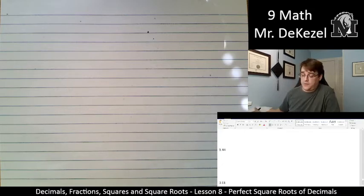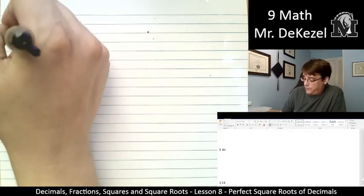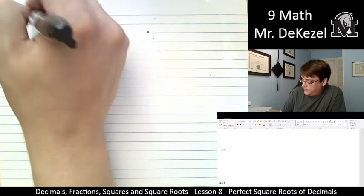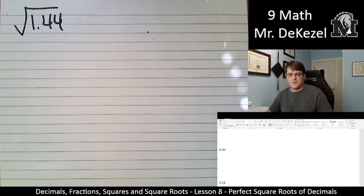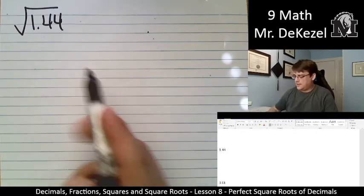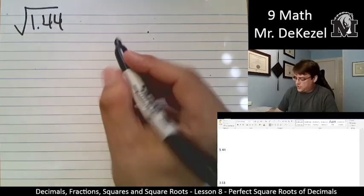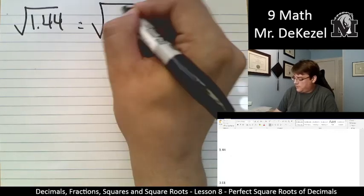So this one we have a decimal as well, even though it's 1.44. So let's do the root of 1.44. Again, doing the root of decimals is not usually easy. So let's go ahead and change this into a fraction. So this is the same as the root of 144 over 100.